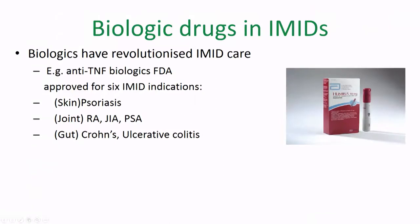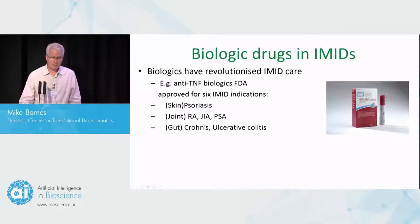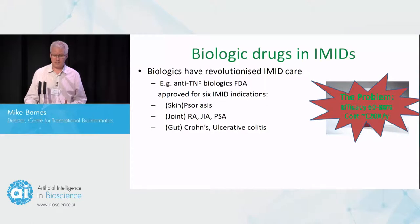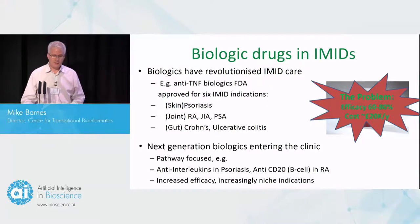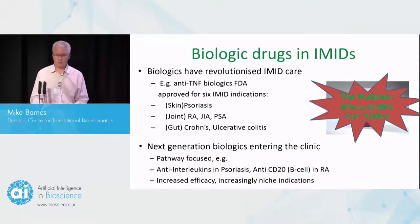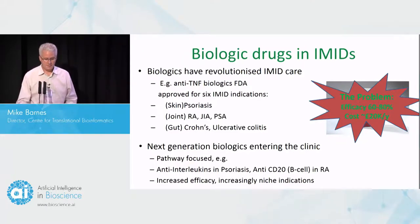Biologics are really revolutionizing IMIDs. Anti-TNF biologics alone have been indicated for six IMIDs in a range of different target areas. The problem is that anti-TNFs have a limited efficacy of between 60% to 80%, depending on the disease and state, and they're very, very costly — about £20,000 a year. There are next generation biologics coming into the clinic which are much more specific to particular diseases and targets, showing much higher efficacy, but there's still that issue about cost and limited efficacy.